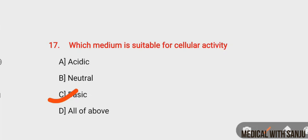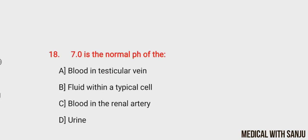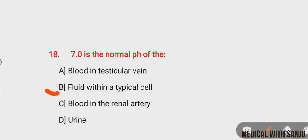Question number eighteen: 7.0 is the normal pH of — option A: blood in testicular vein, option B: fluid within a typical cell, option C: blood in renal artery, option D: urine. The right answer is option B, fluid within a typical cell.